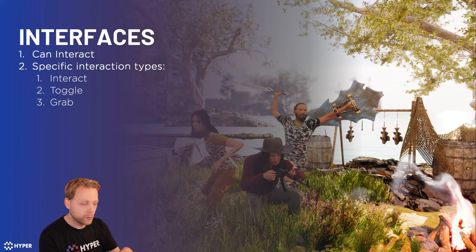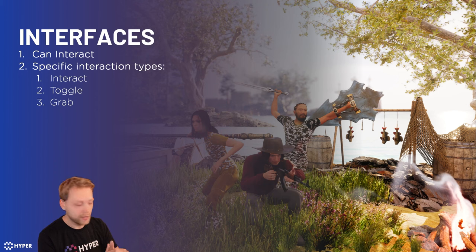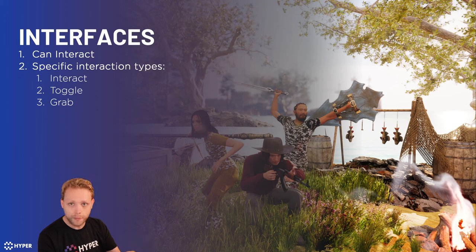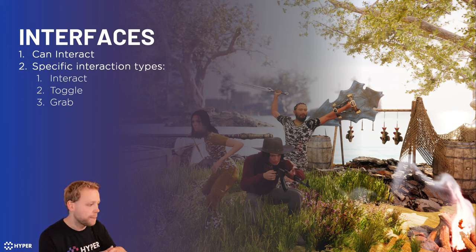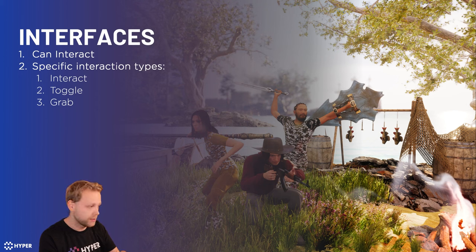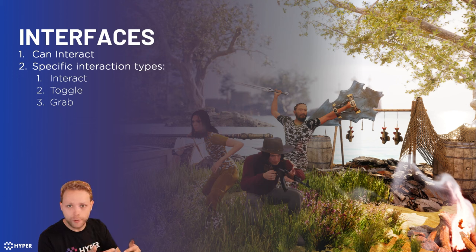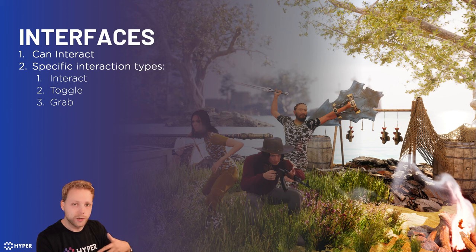Based on that interaction, you can switch on different interaction types. The most common would be the interact type — that is the basic one, just an event that's fired. The only thing that gets through it is a controller of the instigator of that specific interaction, and an event is fired in any actor that implements the interact interface. You can also specify a toggle: if it's already on and I'm interacting with it, I only want to do this; if it's already off, I only want to do that — or toggle it between. So you also have a boolean option to pass through that interface.